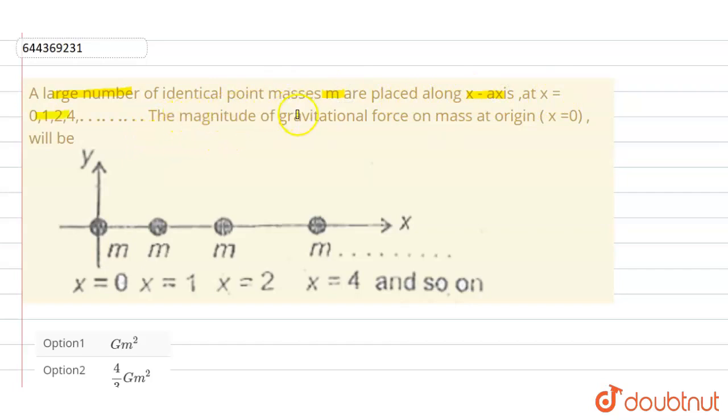The magnitude of gravitational force on mass at origin x equals 0 will be... So in this question we have to calculate the magnitude of gravitational force on mass m which is placed at the origin x equals 0. So let's start this problem.